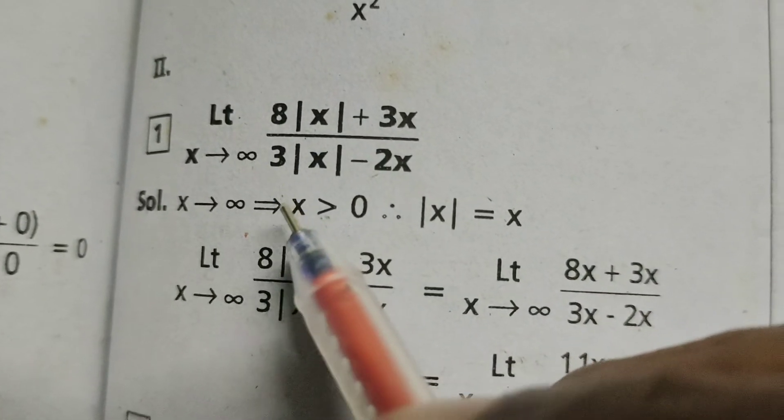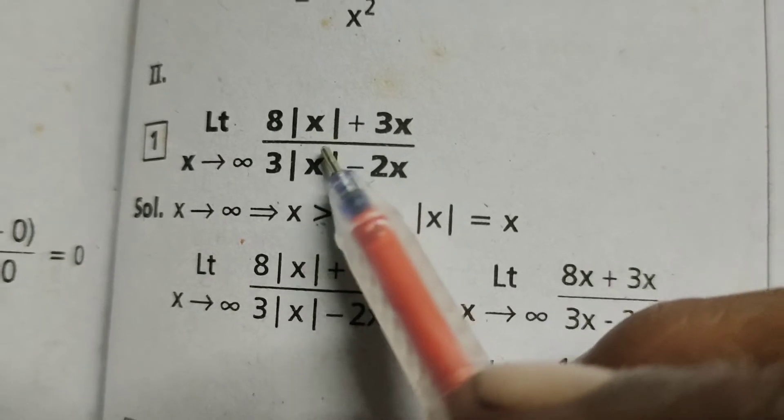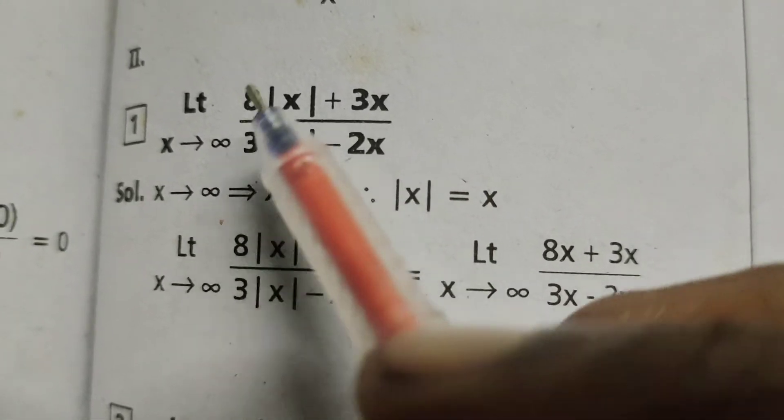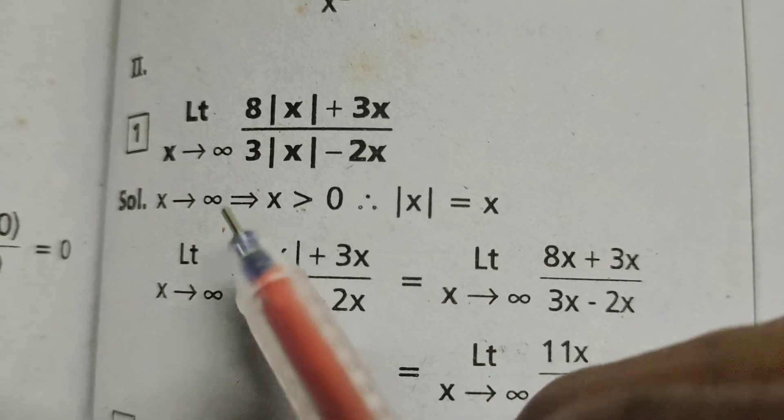Limit x tends to infinity, 8 mod x plus 3x by 3 mod x minus 2x. Now we are going to solve this problem.